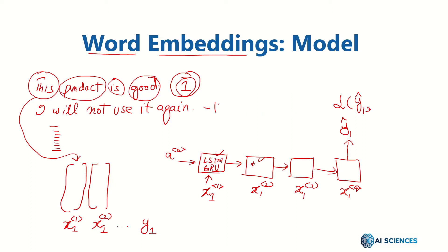We compute the loss between y1-hat and the original y1, then apply backpropagation — in recurrent neural networks this is known as backpropagation through time — and update the shared weights.